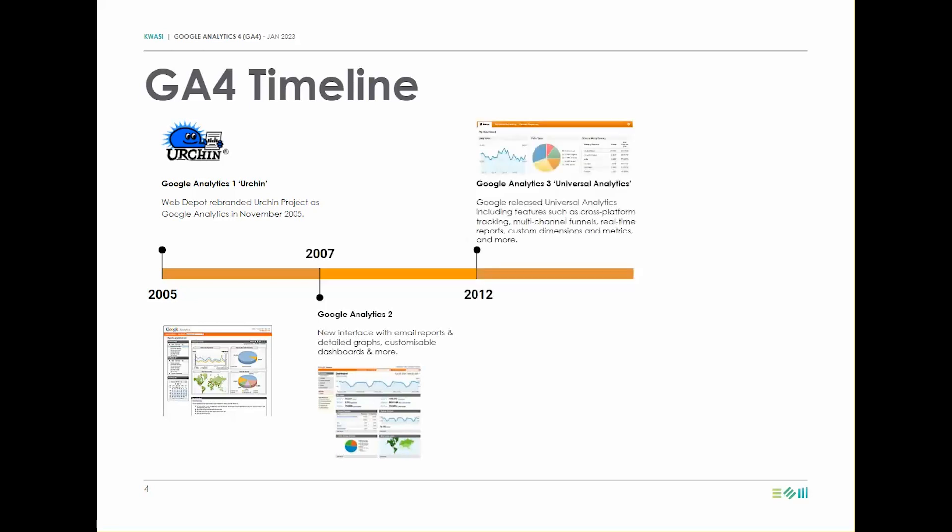In 2012, Google released their new platform, also known as Universal Analytics. This new version included many features such as cross-platform tracking, multi-channel funnels, real-time reports, custom dimensions and metrics, and much more.